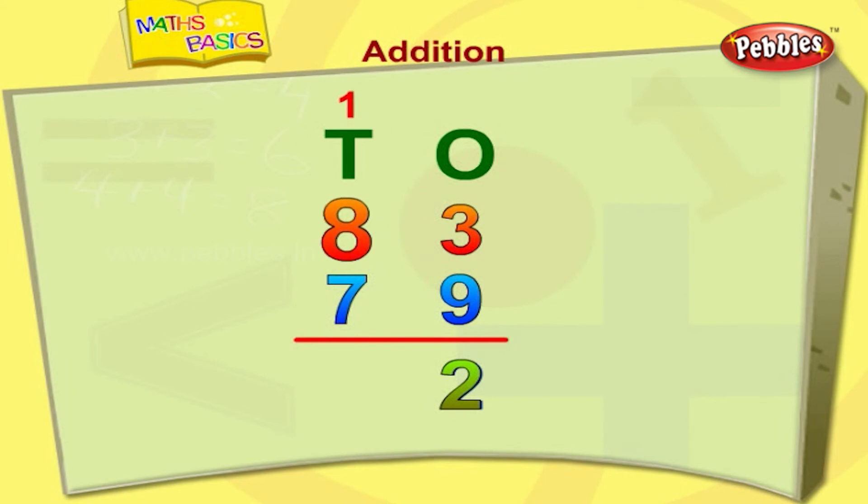1 plus 8 plus 7 is equal to 16. So, 83 plus 79 is equal to 162. Am I right?